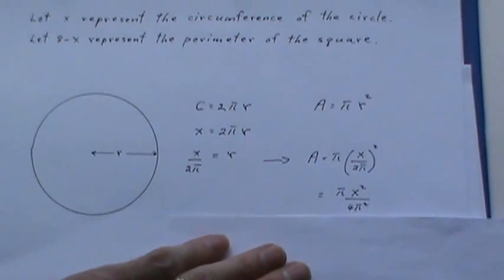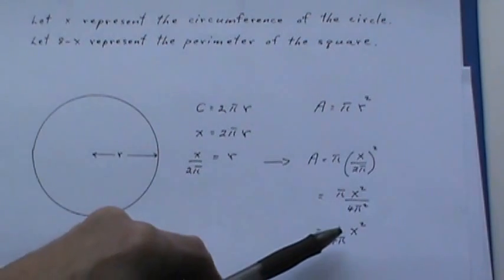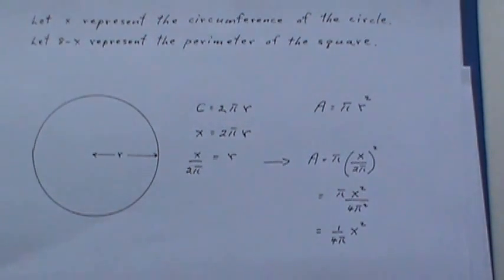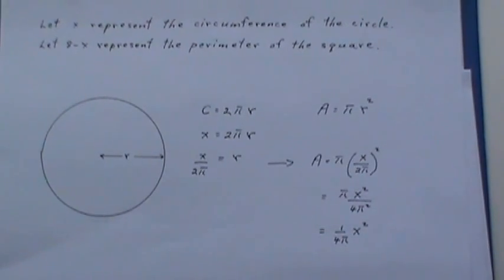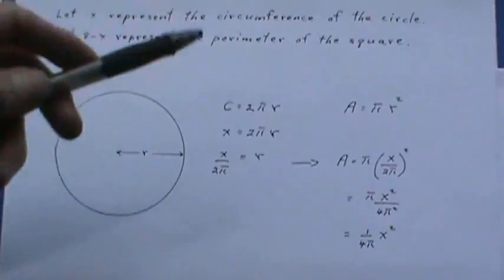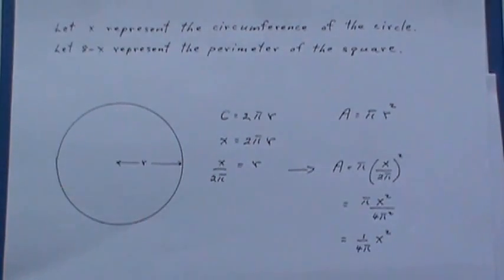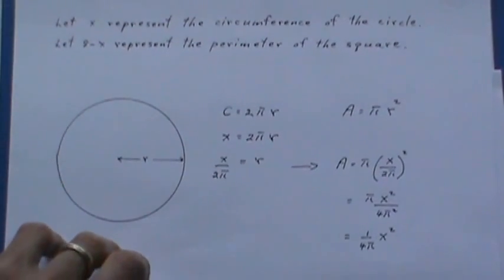Squaring that this is what I get and when I simplify I get one quarter pi X squared. Now notice that I've tried to write this in the simplest possible way. I'm going to take a derivative eventually and I don't want to get into a product or a quotient rule here so I have a constant in front of the X squared so I've got a nice easy derivative.